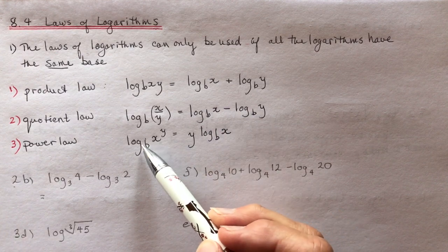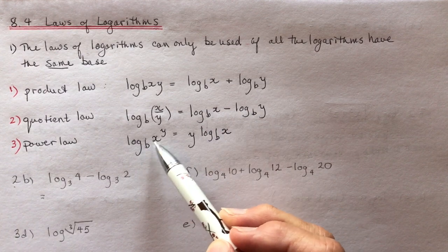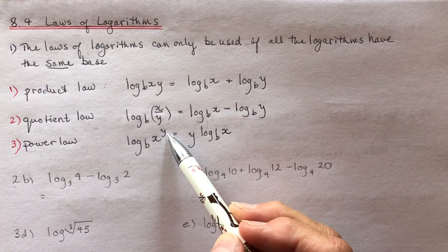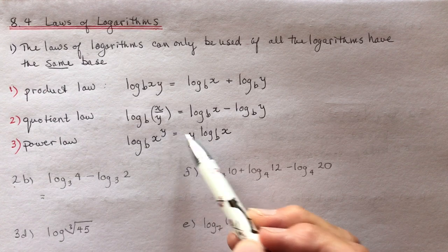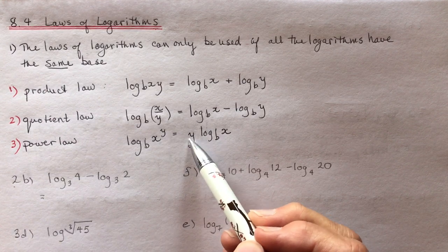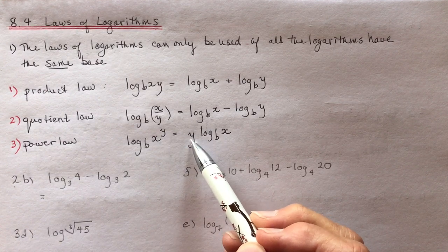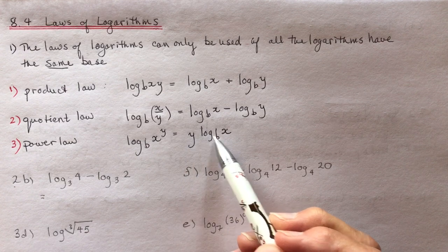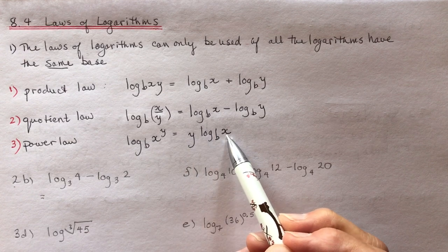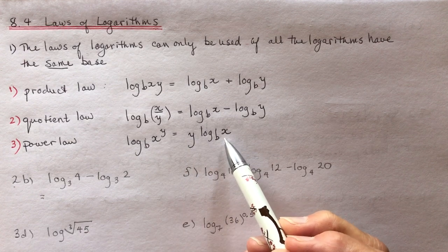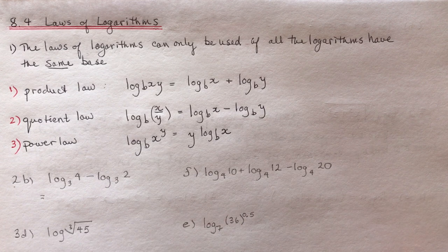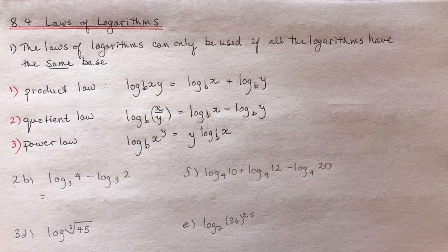And if you have log base b of x to the y, the exponent y comes to the front: it's y times log base b of x. We'll do lots of examples so that you'll be really good at this by the time I go through all of them.